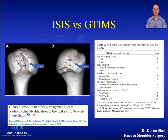There's another score from the US which expanded on the ISIS score but used 3D CT scans to evaluate the amount of bone loss rather than plain x-rays. It's called the Glenoid Track Instability Management Score, or GTIMS.